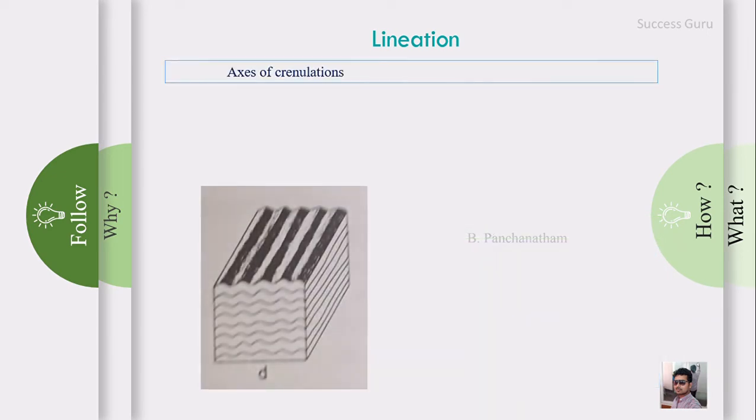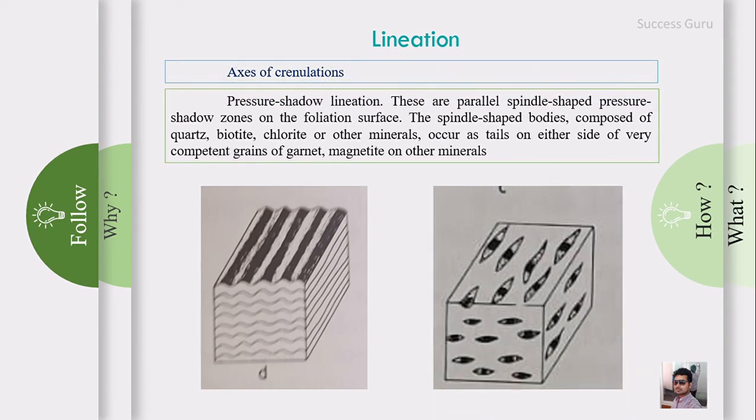The next type is the axis of crenulation, which we can use as a type of lineation. Then there is pressure shadow lineation - these are parallel spindle-shaped pressure shadow zones on a foliation surface. The spindle-shaped bodies are composed of quartz, biotite, chlorite, or other minerals. When external pressure is acting and there are two ranges of mineral strength, the stronger minerals tend to stay in place whereas the weaker minerals try to align according to the stronger minerals, forming pressure shadow lineation. You can see this type of lineation in metamorphic rocks, especially in gneissic rocks with augen texture.